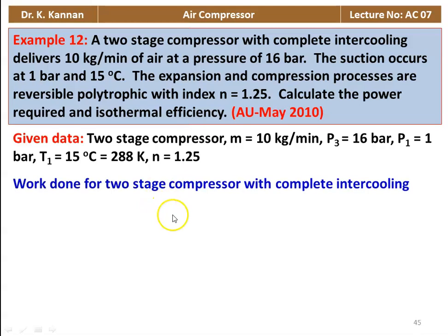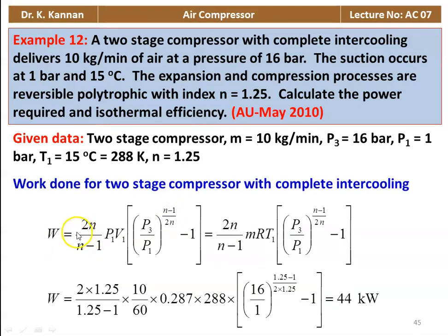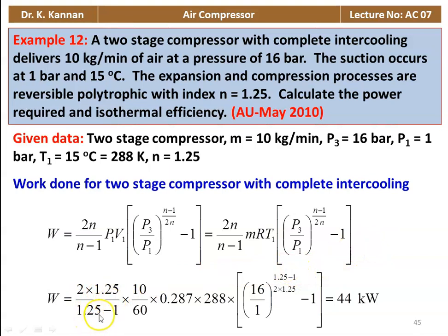Work done for a two-stage compressor with complete intercooling: W = [2n/(n−1)] × P1V1 × [(P3/P1)^((n−1)/2n) − 1]. Since P1V1 = MRT1, substituting: W = [2 × 1.25 / 0.25] × (10/60) × 0.287 × 288 × [(16/1)^((0.25)/(2×1.25)) − 1] = 44 kilowatts.